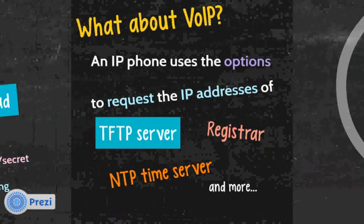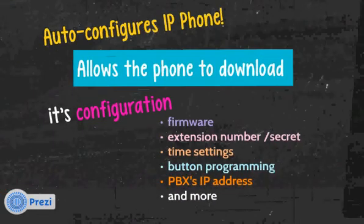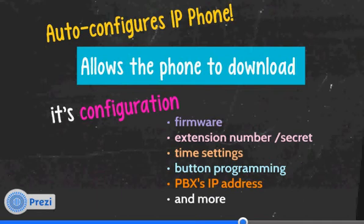So what does this have to do with Voice over IP? An IP phone uses DHCP to get its IP address, but it also uses the options to request the IP address of several different services. A TFTP server is one. You can also have an option to indicate the registrar or the PBX, an NTP time server for network time, and more. The important one is the TFTP server because it allows you to auto-configure the IP phone.